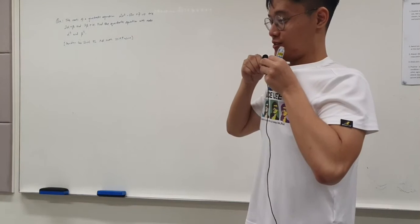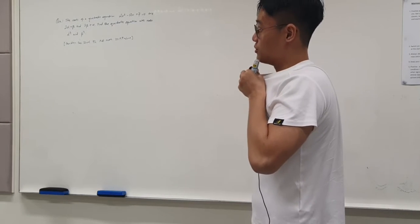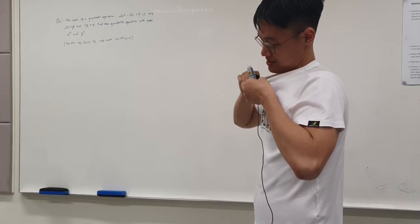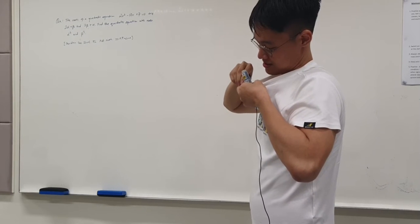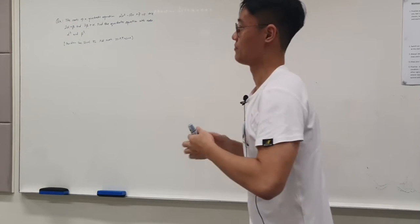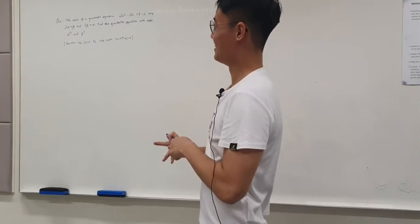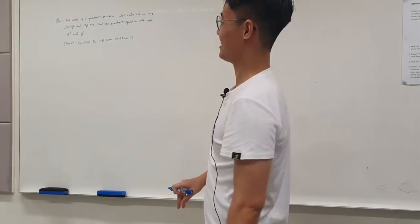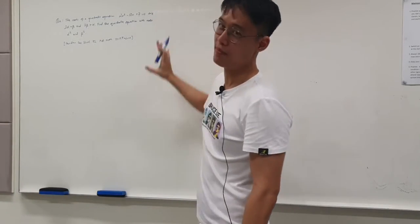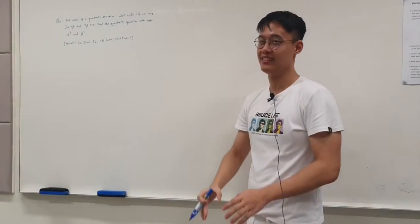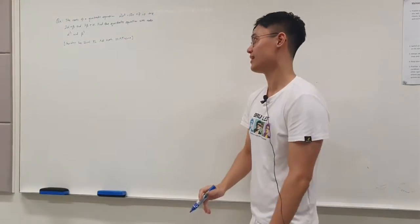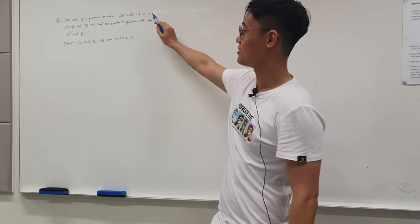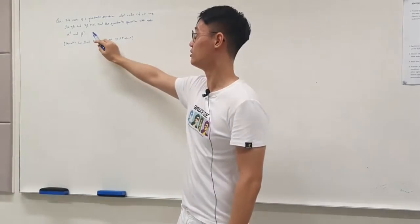Hello guys. So we are going to look at the roots of the quadratic equation. This is a topic that is very famous in additional math. The roots of the quadratic equation 2x² + 12x + 7 = 0 are 2α + β and 2β + α.